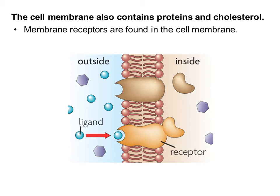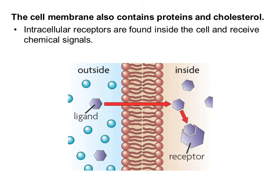Receptors can be found in two places. The first is simply called a membrane receptor, meaning the protein is stuck in the cell membrane, the ligand binds to the receptor, sends off a signal inside the cell, and we get some kind of action happening. The second type is an intracellular receptor, where the protein is actually inside the cell. This means the ligand must first diffuse across the cell membrane, and then it can bind with that receptor protein and the signal occurs.